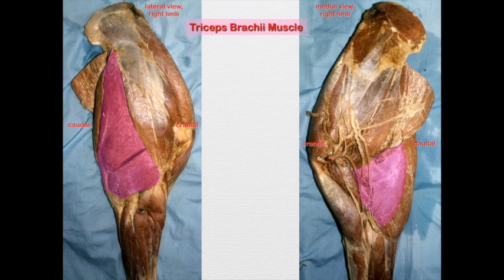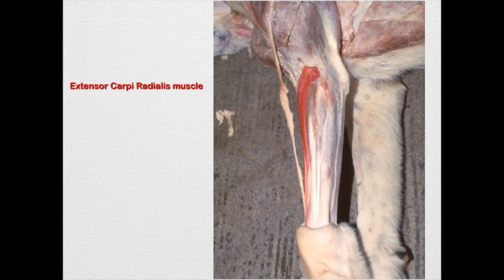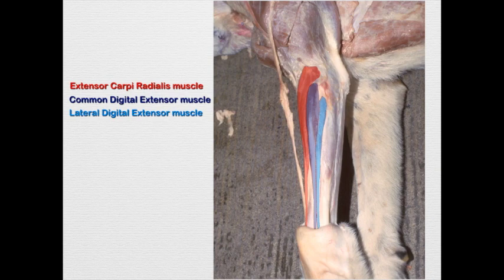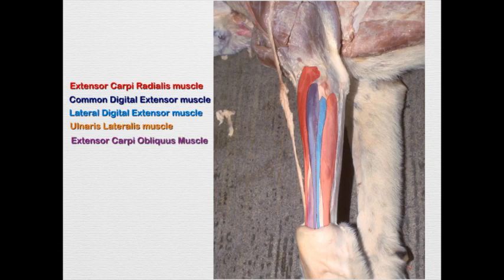It's also going to innervate the tensor fascia antebrachii muscle — so the extensors of the elbow. And then here in the canine, it's also going to innervate the extensor carpi radialis muscle, common digital extensor muscle, lateral digital extensor muscle, ulnaris lateralis, and extensor carpi obliquus muscle — just like in the dog and the horse.